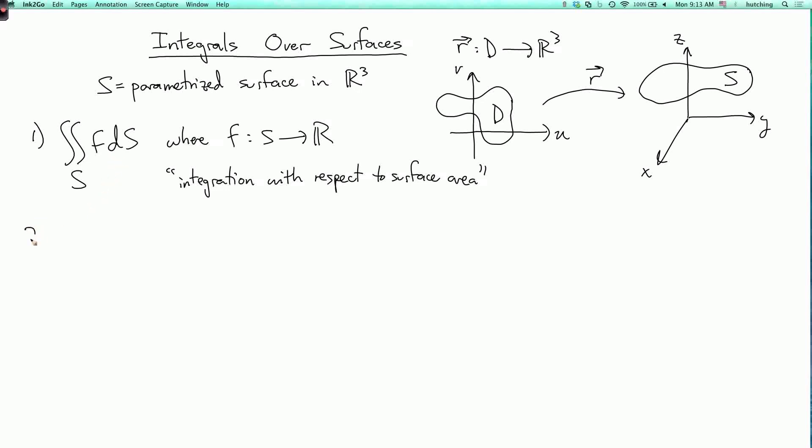Now the second kind of integral over a surface is the double integral over S of capital F with an arrow dot ds with an arrow. This is where F is a vector field, a three-dimensional vector field, whose domain includes the surface S. This has some relation to the integral of F dot dr over a curve that we talked about before. However, there's a crucial difference which we'll get to when we discuss this integral.